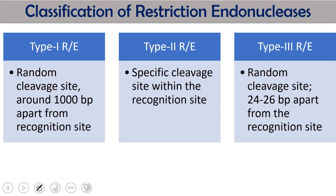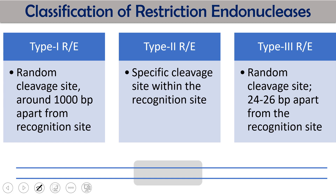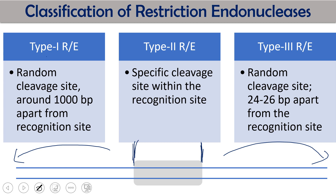Examples include BamHI, EcoRI, HindIII, NotI, PstI, SmaI. These restriction enzymes are classified into three important categories: Type I, Type II, and Type III. Type I enzymes recognize one DNA sequence but cleave at a site approximately 1000 base pairs away from the recognition site. Type II enzymes have their specific cleavage site within the recognition site — they cleave exactly within that region. Type III enzymes cleave at a random site 24 to 26 base pairs away from the recognition site.